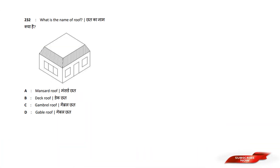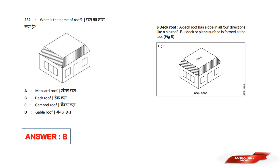What is the name of this roof? Options are: A) One side roof, B) Deck roof, C) Gravel roof, D) Gable roof. Answer option B — it is a Deck roof. A Deck roof on four sides comes to a hip roof, but this is a Deck roof. Answer option B.